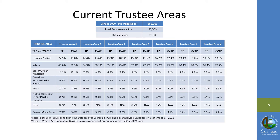This table shows the demographic areas of current trustee areas based on two data points. The columns labeled TP represent the total population taken from the Census. The CVAP column represents the citizen voting age population, a measure of voting strength for minority groups relevant for determining compliance with the Federal Voting Rights Act, to ensure trustee area boundaries are not dividing or splitting protected classes of voters. In terms of CVAP, the largest concentration of a protected class is in Area 1, where Hispanic Latino voters constitute 18.8 percent based on citizen voting age population.